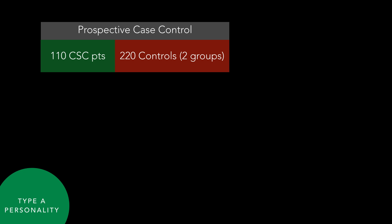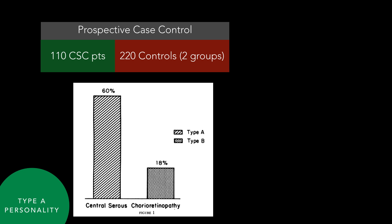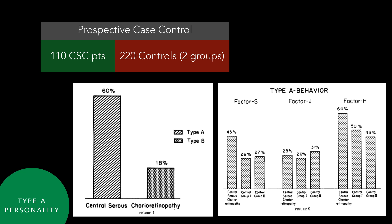Type A personality is one we learned about early in residency. Type A people have a competitive drive, a sense of urgency — they're go-getters, aggressive, and can be hostile. Dr. Januzzi, in his AOS thesis paper, looked at 110 patients with central serous and gave them a survey alongside 220 controls. Unsurprisingly, 60% of the central serous patients had a type A personality versus 18% with a type B personality. Breaking it down into subscales, Factor S — speed and impatience — was much higher in CSC patients, and Factor H — hard-driving competitiveness — was also higher in CSC patients compared to controls.